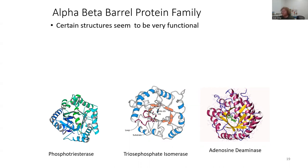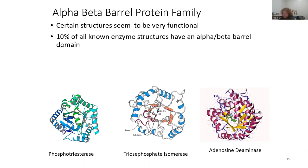Alpha-beta-barrel proteins, as you can imagine, have alpha helices and beta sheets within that structure, and they make what looks like a barrel. If you look at the middle, this triose phosphate isomerase — we're getting a top-down view of that protein that kind of has a central pore to it. Ten percent of all known enzyme structures have an alpha-beta-barrel domain that provides them with one particular structure.